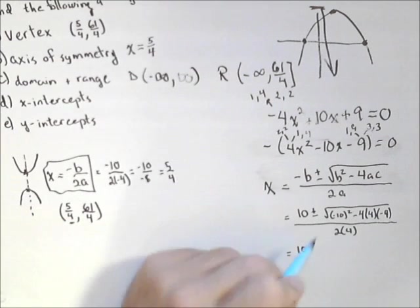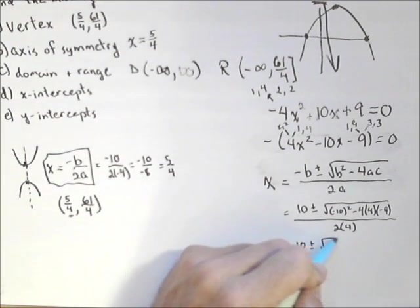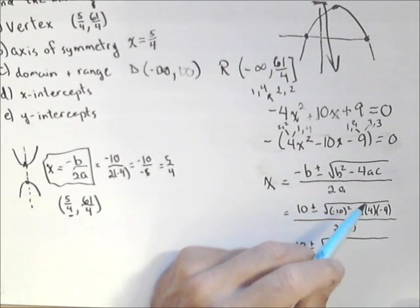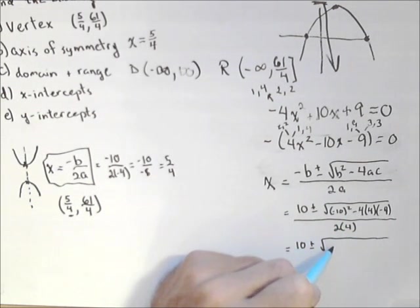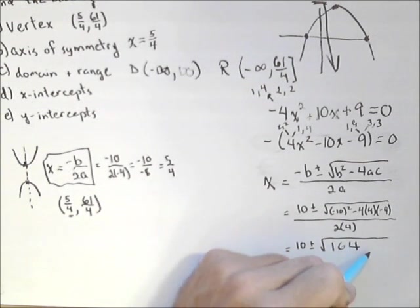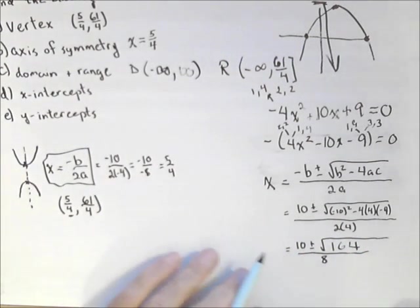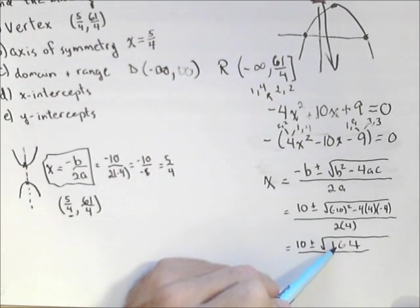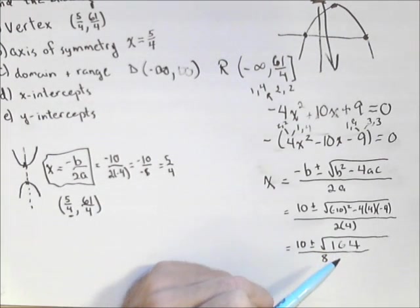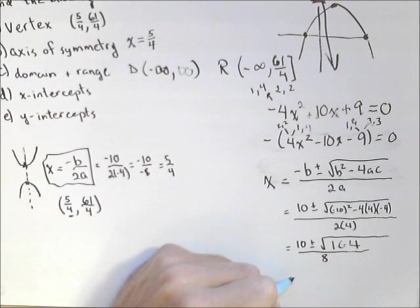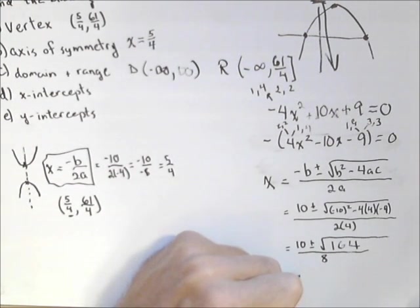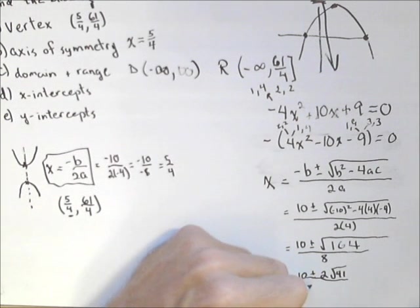So simplifying, we have (10 ± √(100 + 144))/8. Here we have 100 plus 4 × 4 is 16 × -4 is -64, so plus 64. So 164, all over 8. Now this thing is not a perfect square, but it does have perfect squares in it. For instance, it's divisible by 4. If we divide it by 4, we get 41. Now in another video I showed how to simplify this, but we can pull a 4 out of the radical. So we get (10 ± 2√41)/8.